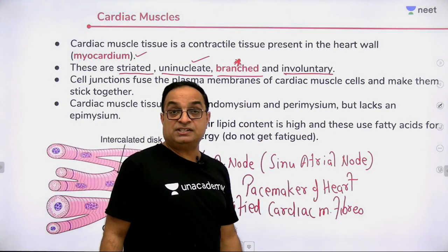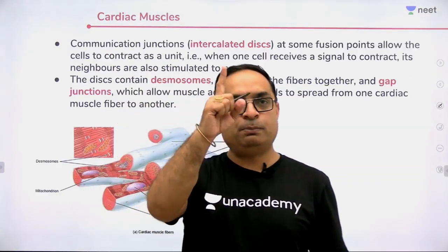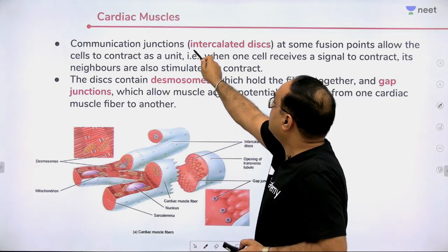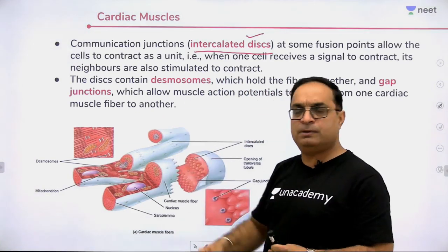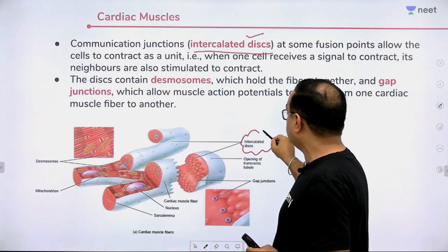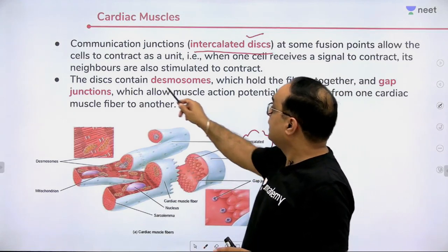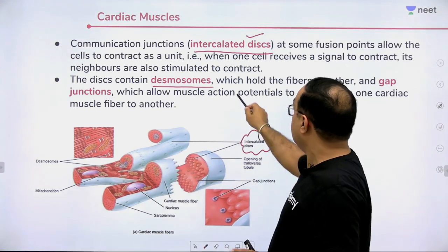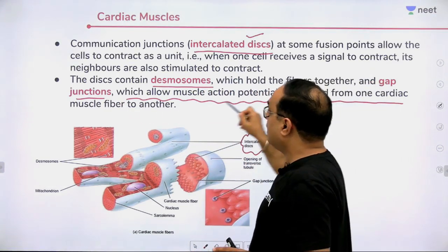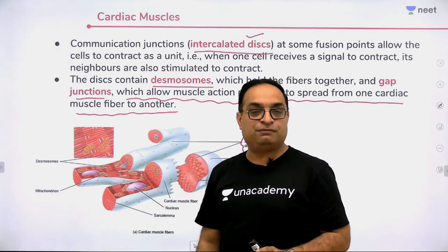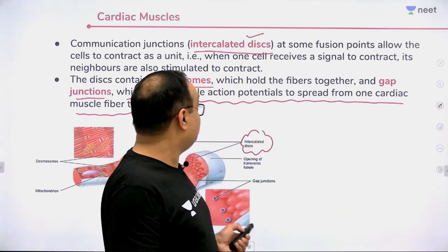Cardiac muscles have a high lipid content and use fatty acids for energy, so they do not fatigue. Adjacent cardiac muscle fibers are connected by intercalated discs, which contain desmosomes — holding fibers together — and gap junctions, which allow muscle action potentials to spread quickly from one cardiac muscle fiber to another. The AV node (atrioventricular node) is the pace setter, receiving impulses from the SA node and distributing them via the bundle of His and Purkinje fibers.